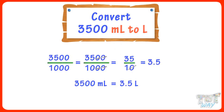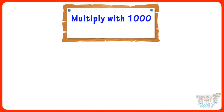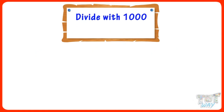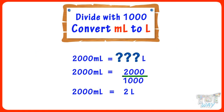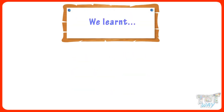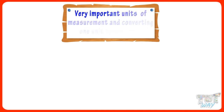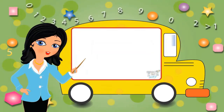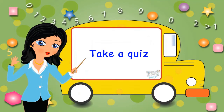So, we multiply by 1000 if we want to convert liters to milliliters, and we divide by 1000 if we want to convert milliliters to liters. Kids, today we learned very important units of measurement and converting one unit to the other. Now go ahead and take a quiz to learn more. Bye-bye!